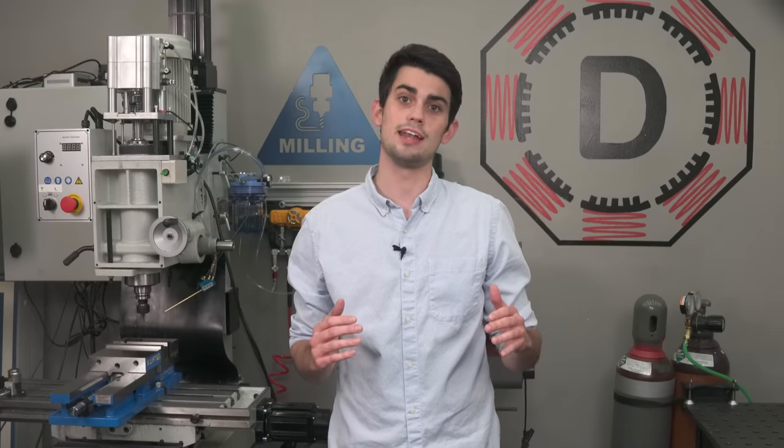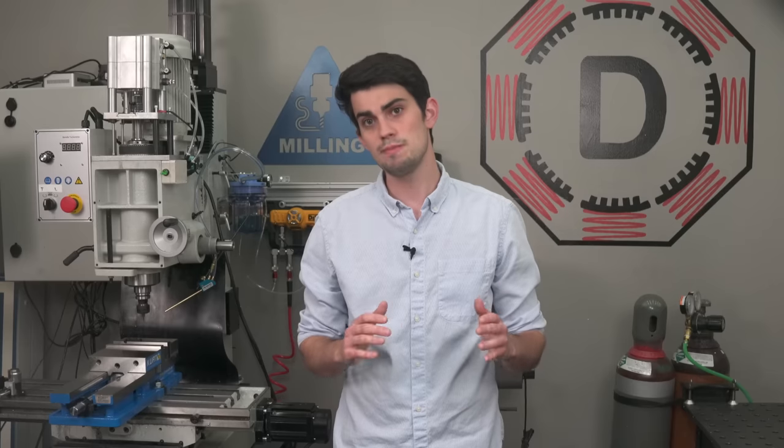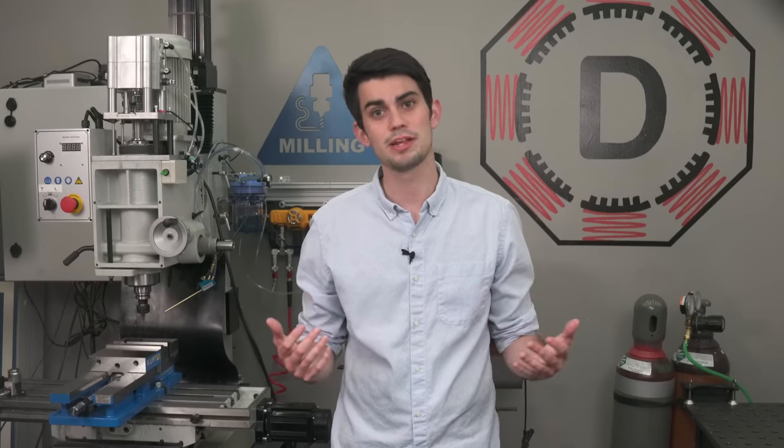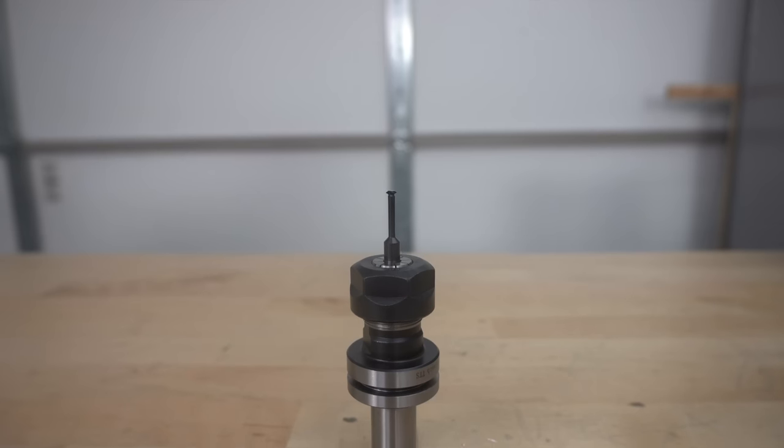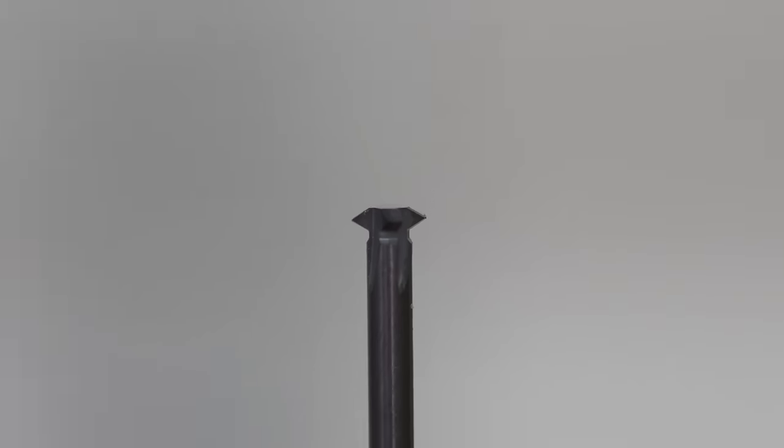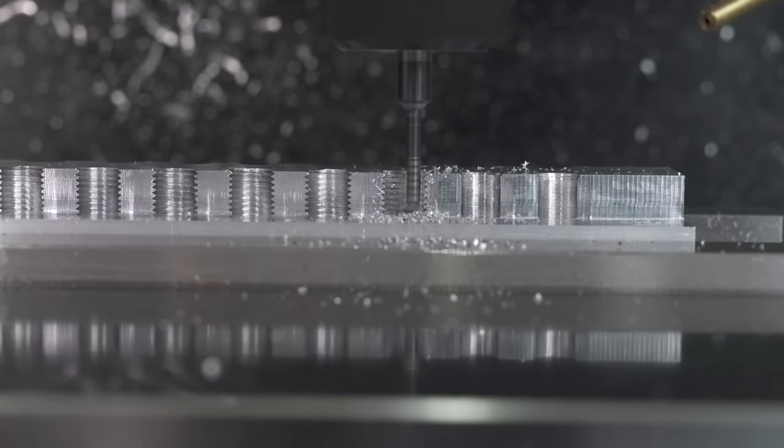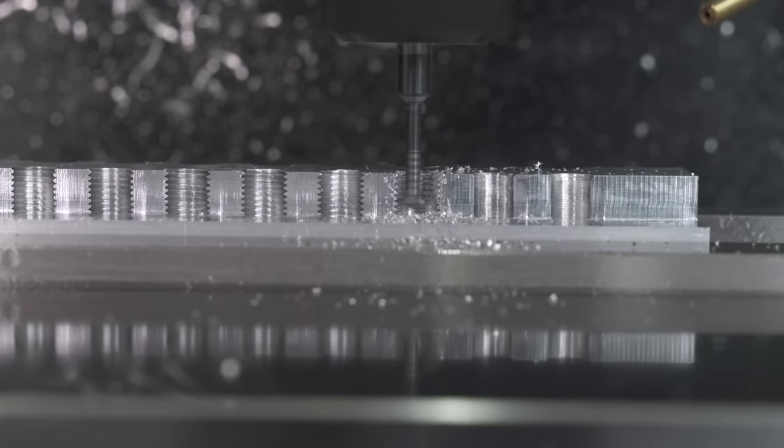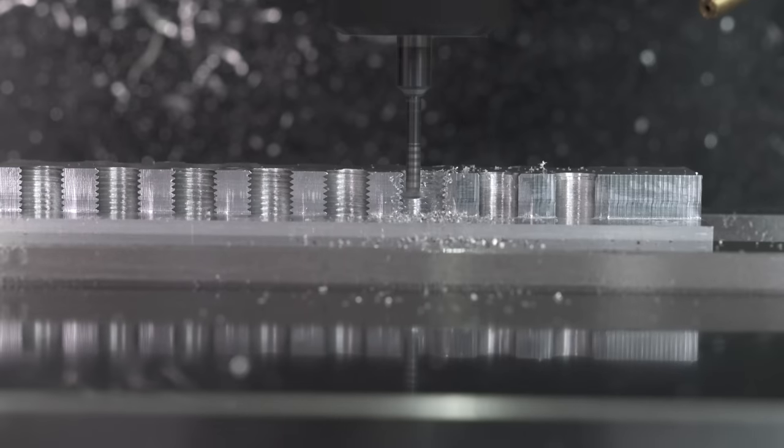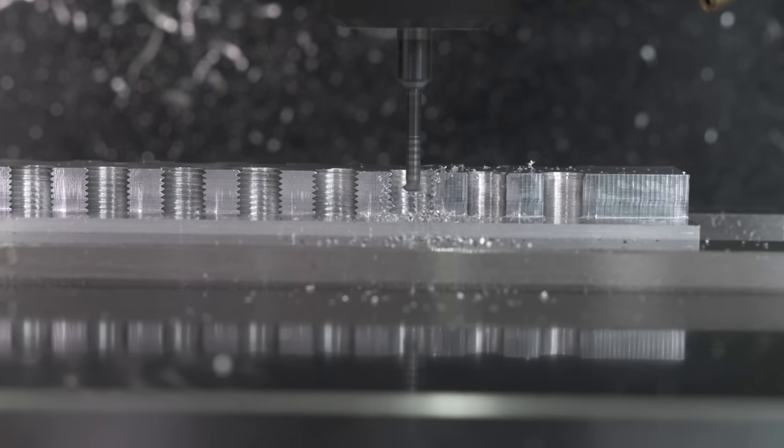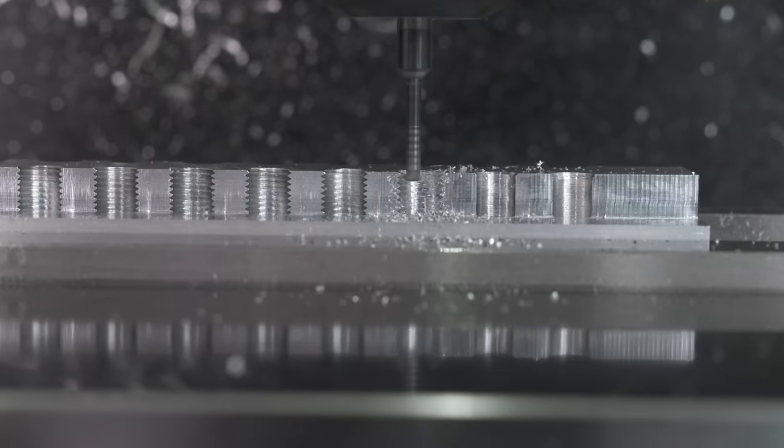Thread milling, on the other hand, doesn't require a special holder or spindle synchronization. Thread milling is very much in a category of its own. This technique relies on a tool that is aptly named the thread mill. The thread mill is moved in a helical path by the X, Y, and Z motors of the mill. The exact spindle RPM is not important as long as it's high enough that the thread mill can cut through the material.